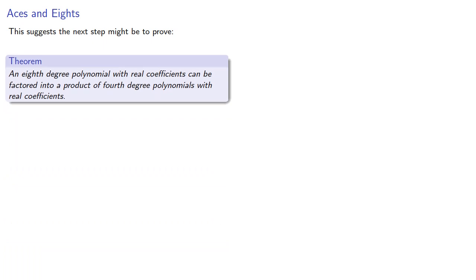Now this suggests the next step might be to prove that an eighth degree polynomial with real coefficients can be factored into a product of fourth degree polynomials with real coefficients. And Euler does outline those steps.